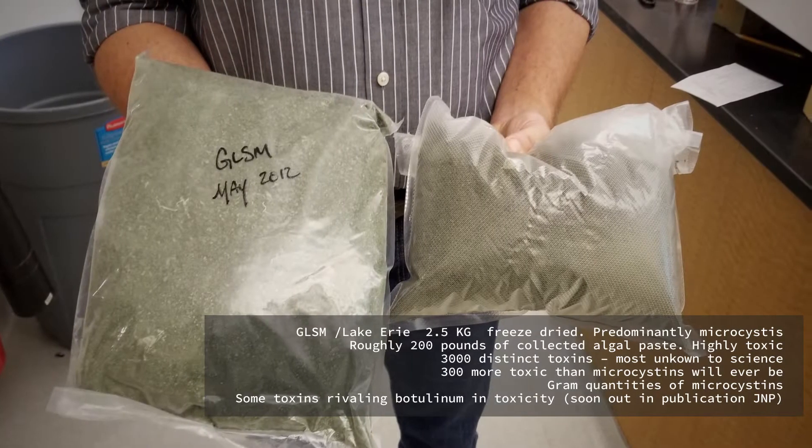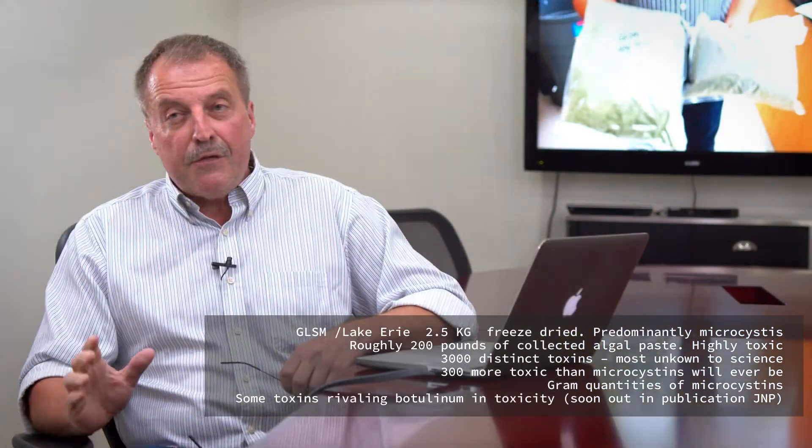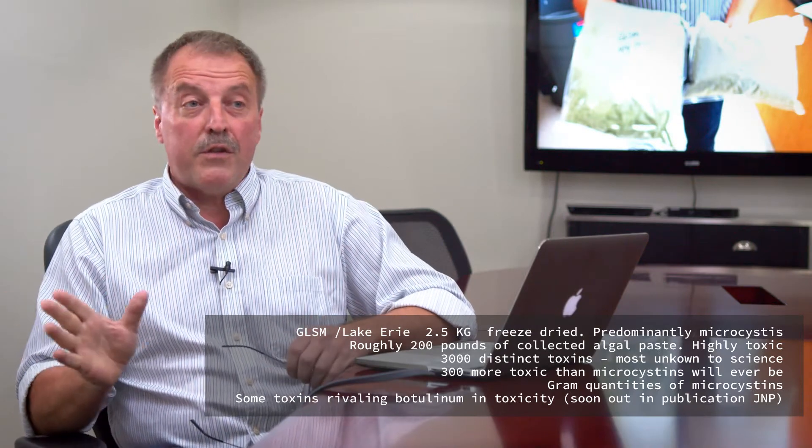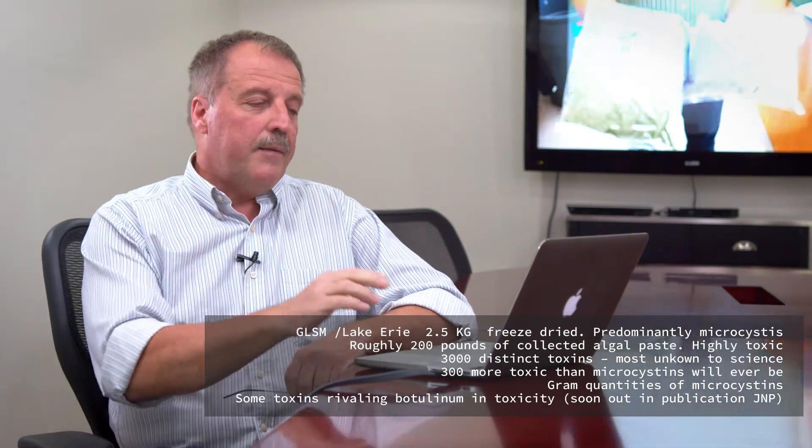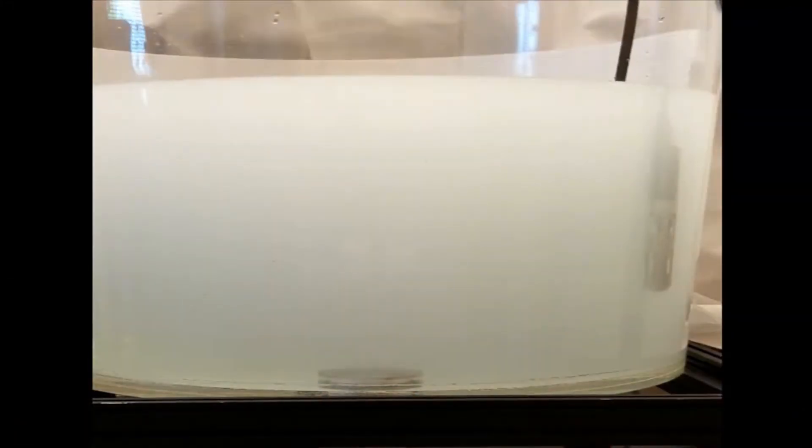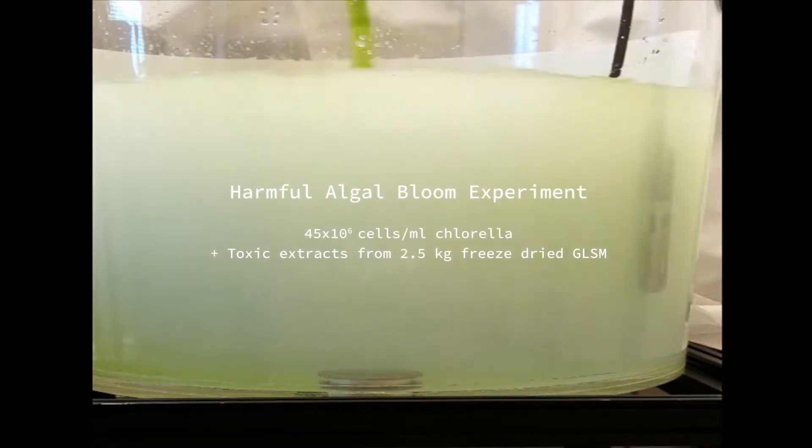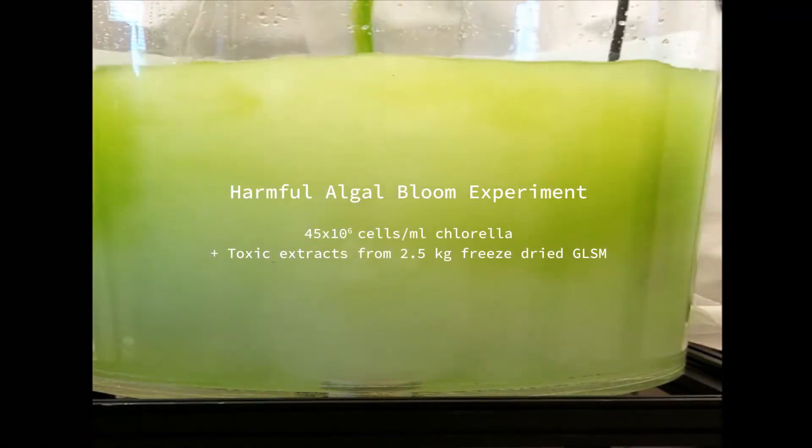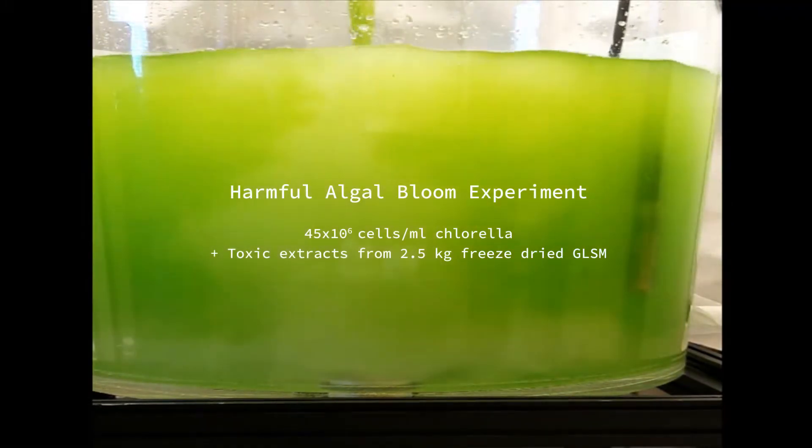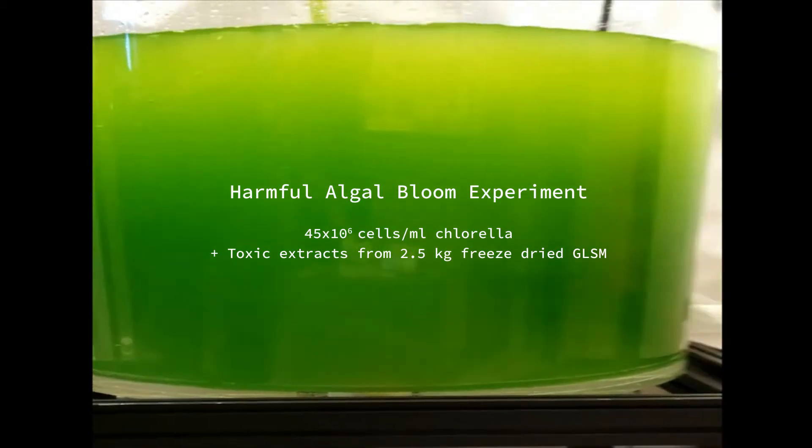What you're looking at in this particular slide is freeze-dried algae from Lake Erie and Grand Lake St. Mary's. It's full of toxins and all the unknowns that I've just alluded to. We extracted it, and what you're looking at here, the water's white. We just started the nanobubble generator with just air. What we're going to put into this tank is a make-up harmful algal bloom. We're going to put in a number of liters of 45 million cells per mil chlorella. In addition, I'm going to throw in the extract from that dried algae.